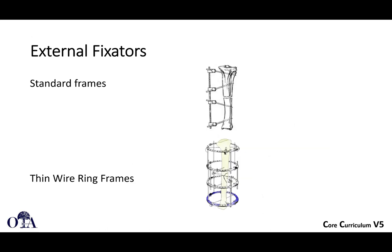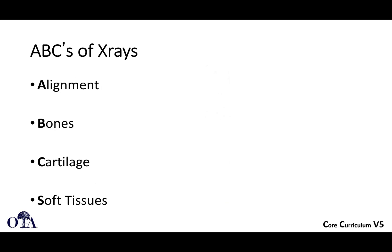External fixators include standard bar-and-clamp devices and ring fixator devices. Depending on where you practice, you may see many or few ring fixators. Standard frames are simpler to use, often used for temporary stabilization but also for definitive fixation.